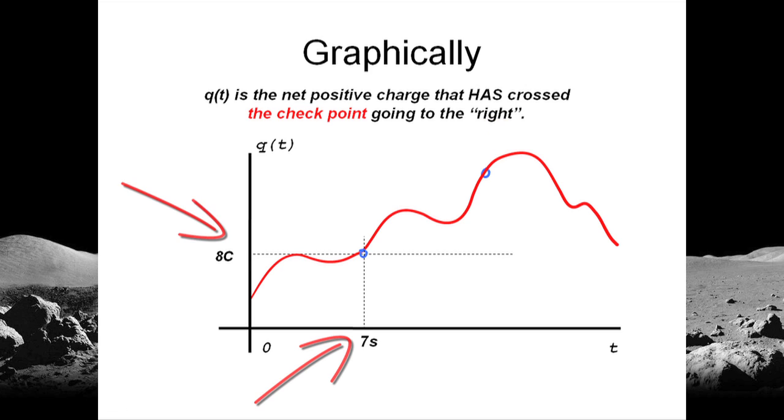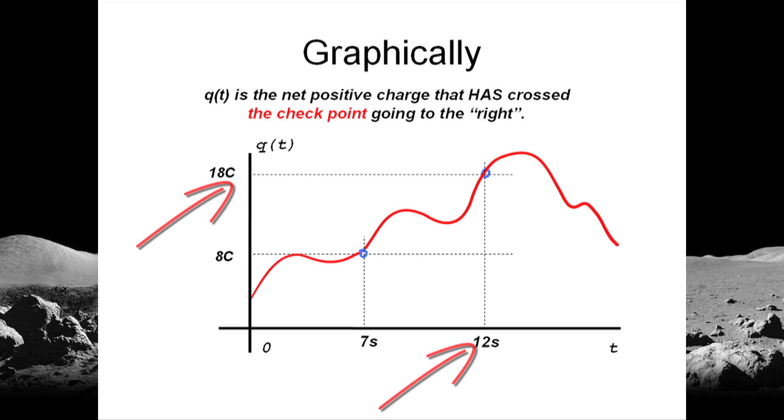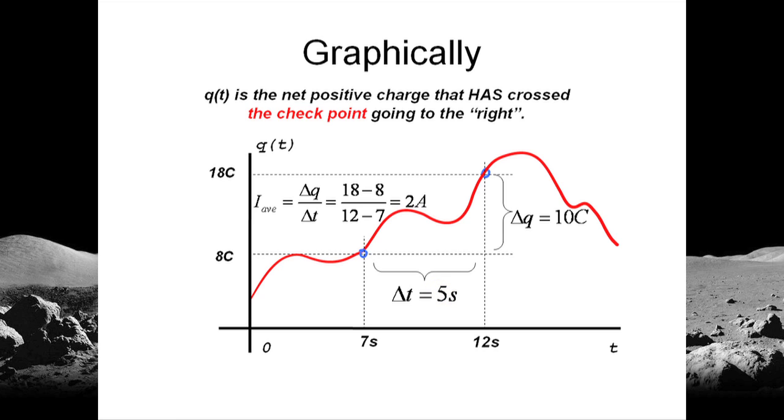At t equals 7 seconds, 8 coulombs had already crossed the checkpoint going to the right. At t equals 12 seconds, 18 coulombs had already crossed the checkpoint going to the right. What that means is that between t equals 7 seconds and 12 seconds, 10 coulombs of charge crossed the checkpoint going to the right. In how long? In 5 seconds. Oh, I see. 10 coulombs crossed the checkpoint in 5 seconds, 10 coulombs in 5 seconds, that is an average of how much? 10 divided by 5, 2 amps.